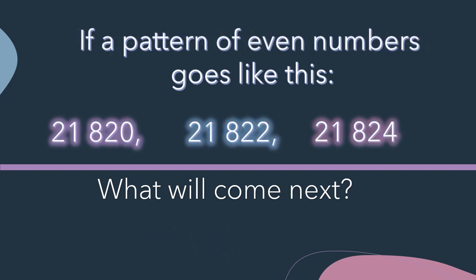If a pattern of even numbers goes like this: 21,820, 21,822, 21,824. What will come next?